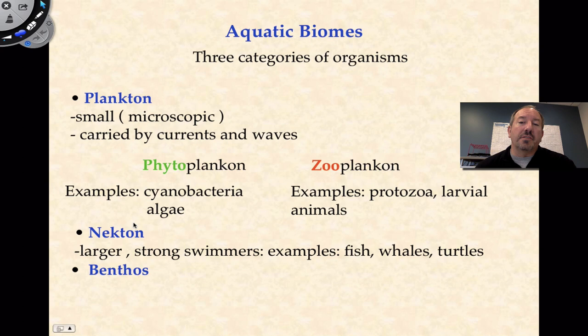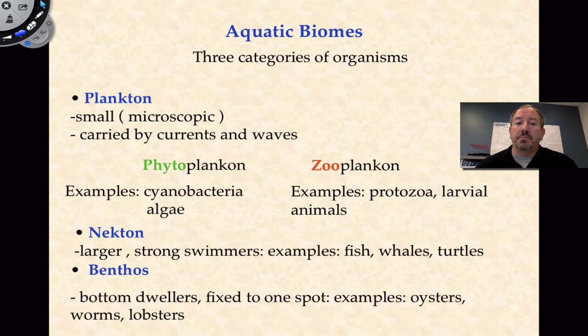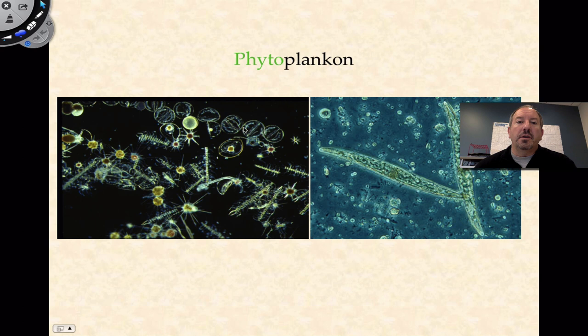So you get floaters, you get swimmers, and then you have the third class of organisms: benthos, which are organisms on the ground — ground dwelling. They're capable of moving but are mostly on the ground; some are fixed to a particular spot. Worms, lobsters, oysters, sea urchins — things stuck to a substrate on the bottom. So we have floaters, swimmers, and bottom dwellers.